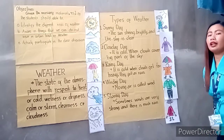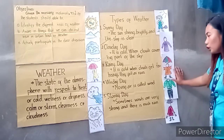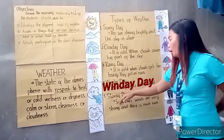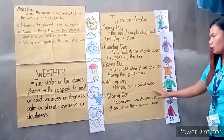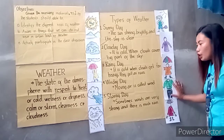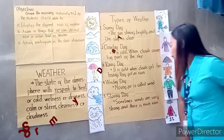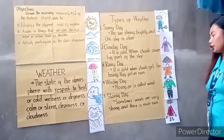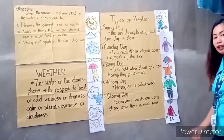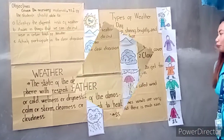During a rainy day, we need to use an umbrella and raincoat. So windy day: moving air is called wind, so we need to use a jacket and trousers. So stormy day: sometimes winds are very strong and there is much rain, so we need to use an umbrella, gloves, or boots.